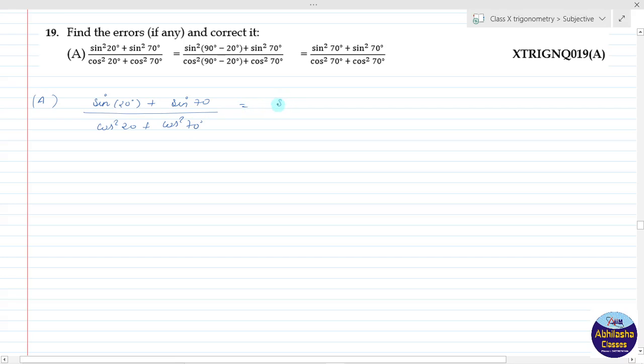So, we can write 20 degrees as 90 minus 70 degrees. 90 minus 70 is 20. So it becomes sin squared of 90 minus 70 degrees plus sin squared 70, upon similarly cos squared of 90 minus 70 degrees plus cos squared 70.